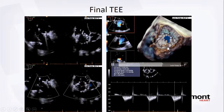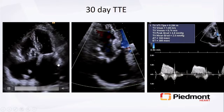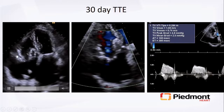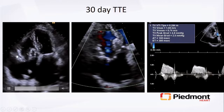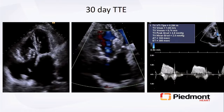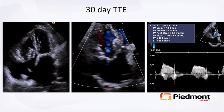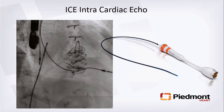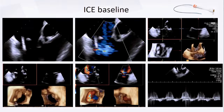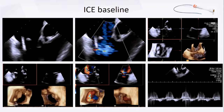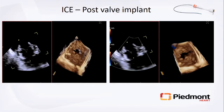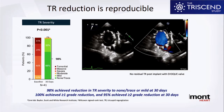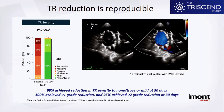Thirty-day transthoracic echo shows a relatively tall valve with a large shadow in the right ventricle. Mean gradient around 2.5 mmHg. All these patients must be on anticoagulation for at least six months per trial protocol. We have been utilizing ICE in more recent cases — not as a standalone but as an adjunct with TEE using a 40-volume Siemens ICE probe — to build experience with ICE in tricuspid interventions.